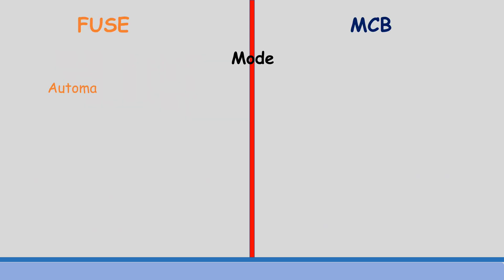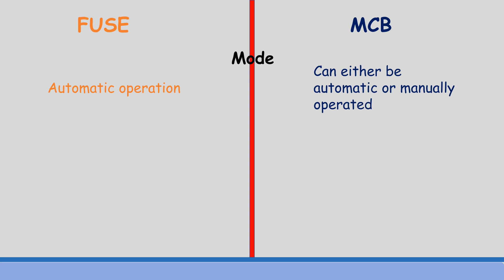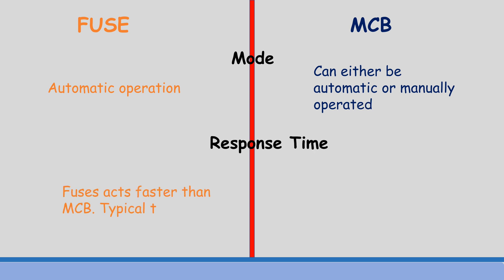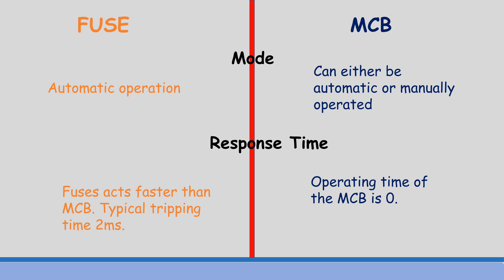The function of a fuse is automatically operated. MCBs can either be automatic or manually operated. Fuses act faster than MCBs, with a typical tripping time of 2 milliseconds. The operating time of the MCB is 0.02 to 0.05 seconds.